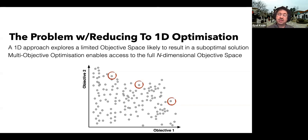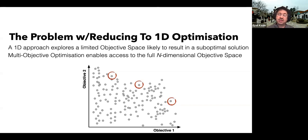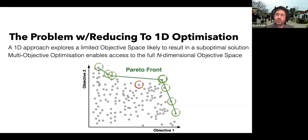In multi-objective optimization, we want to turn on the light — see the full solution space — and then make our subjective decision of what we consider optimal. For example, here we want to maximize both objectives. There's no feasible solution at the ideal corner, so maybe our domain expert will select one point, or maybe they want to overweight objective two over objective one and select another. We quantify this with a front called the Pareto front of solutions, in which they are all considered equally optimal. Once we realize that, we make our subjective decision.